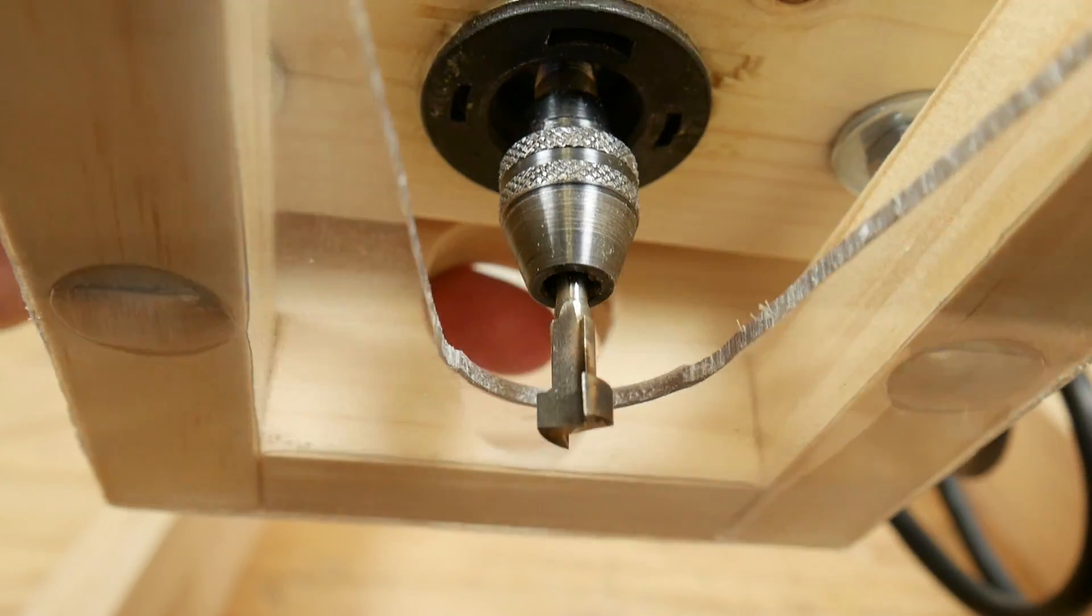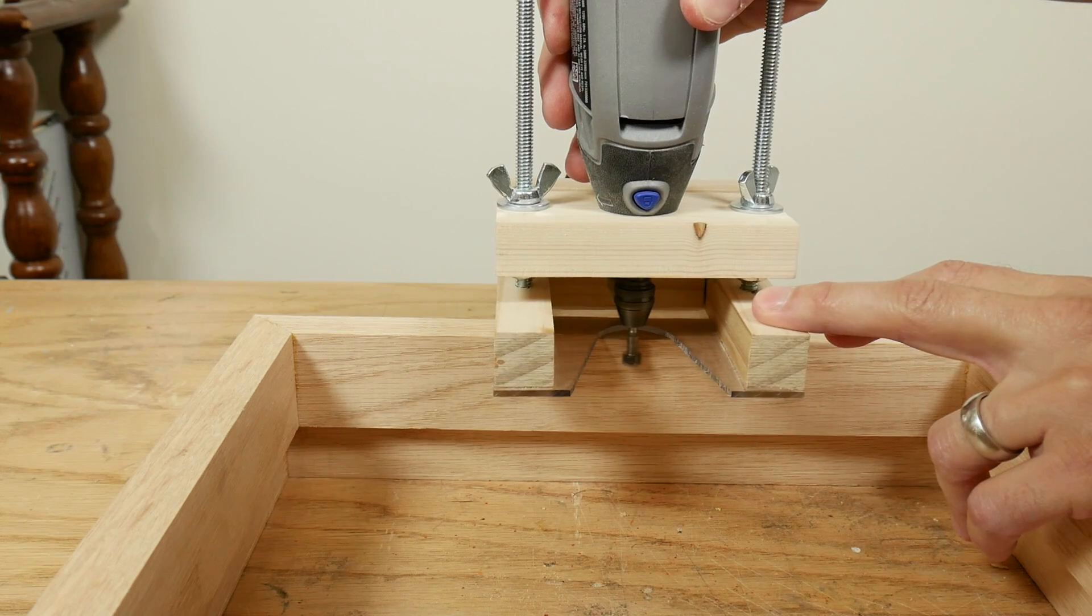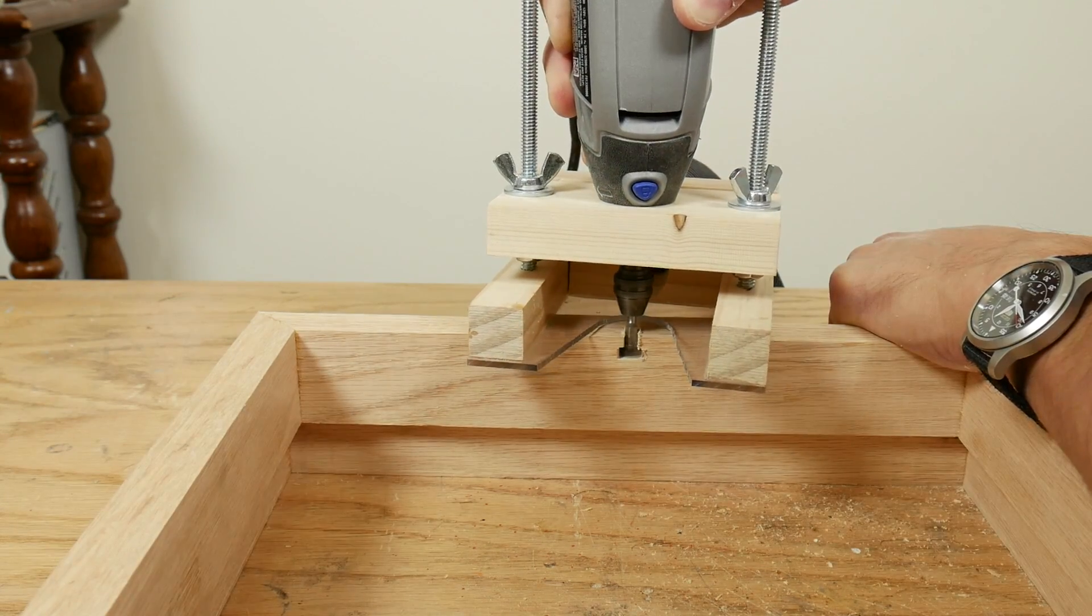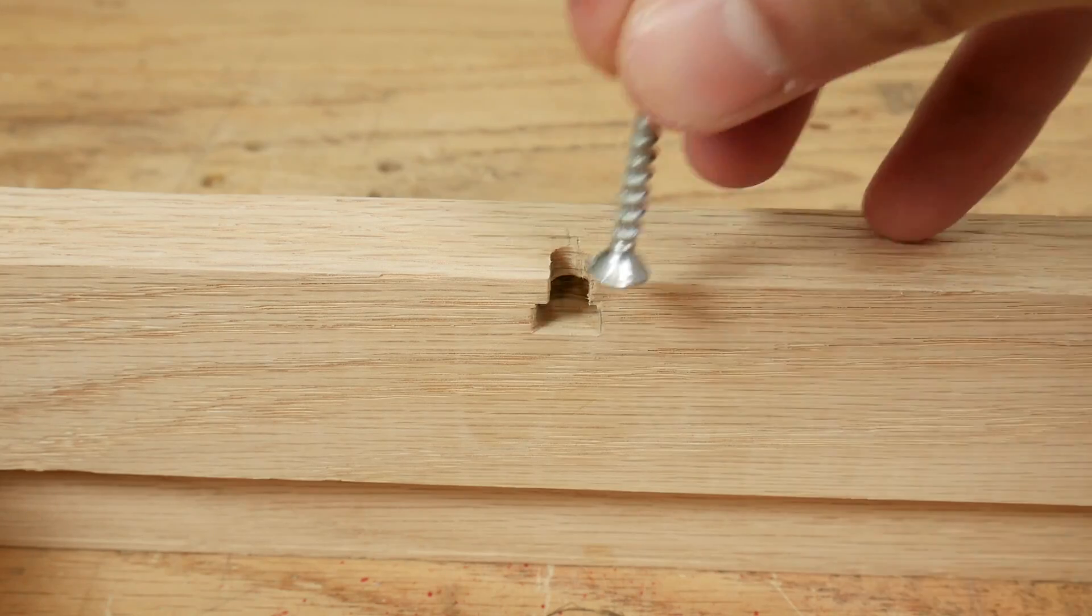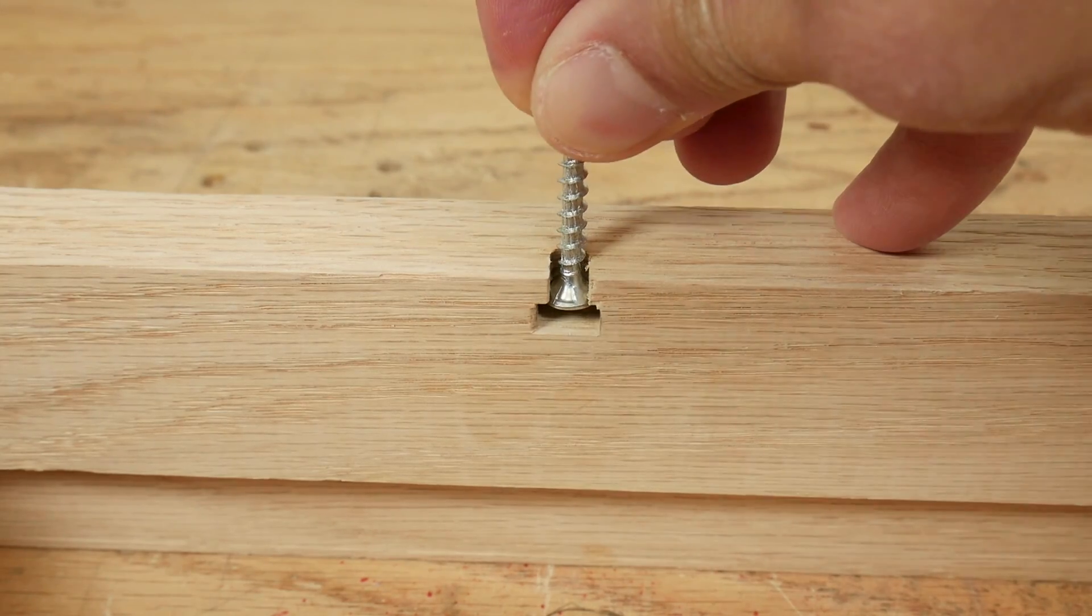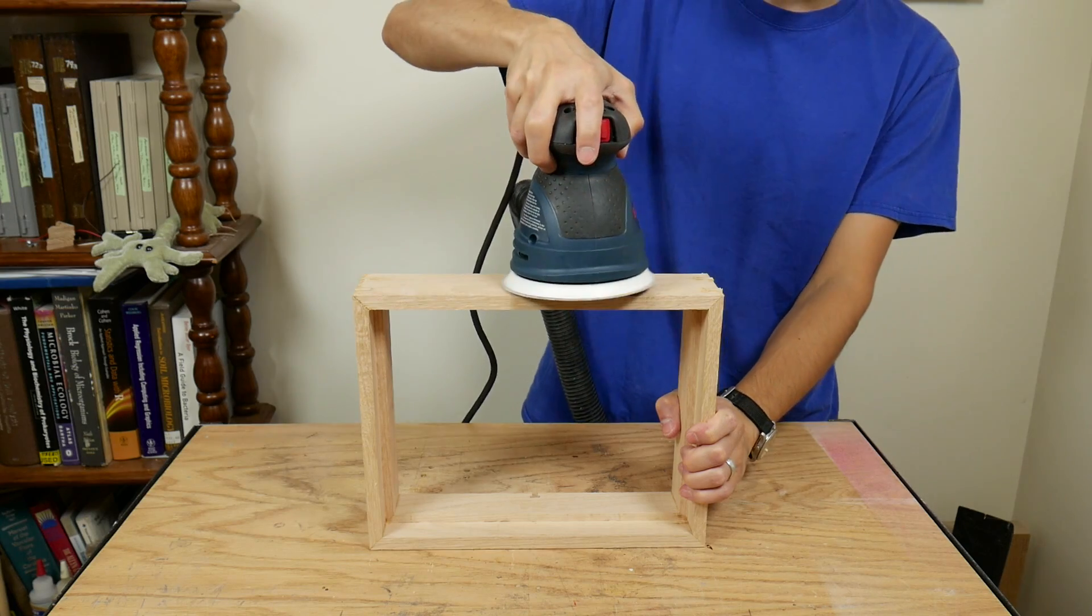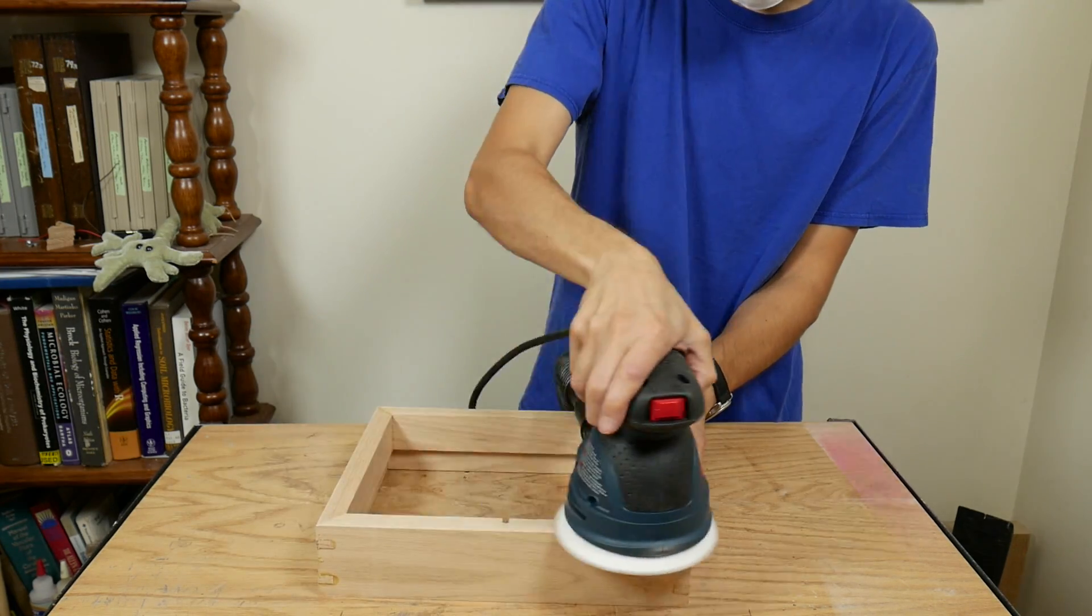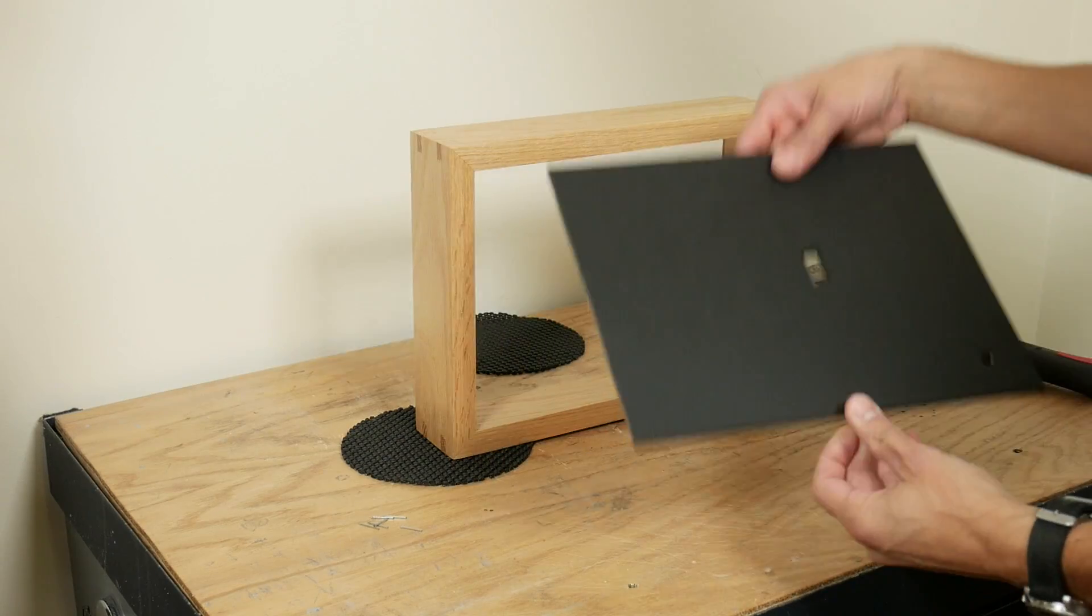I used a keyhole bit in a dremel rotary tool and a homemade router base I made for it to cut a keyhole in the top of the back of the frame. This will allow me to hang the frame on a screw. Then I sanded the frame down to 220 grit and finished it with spray lacquer.